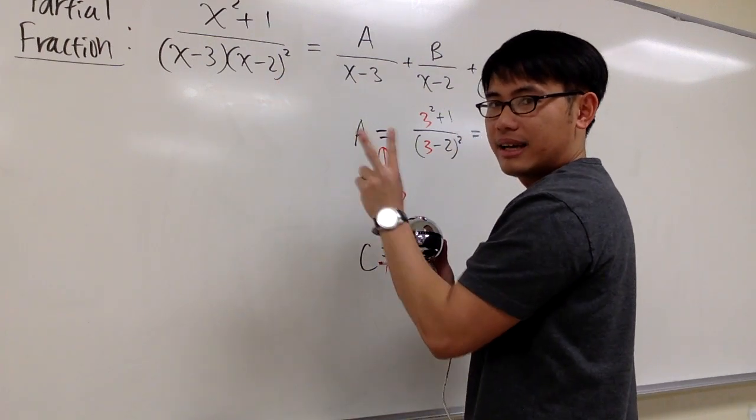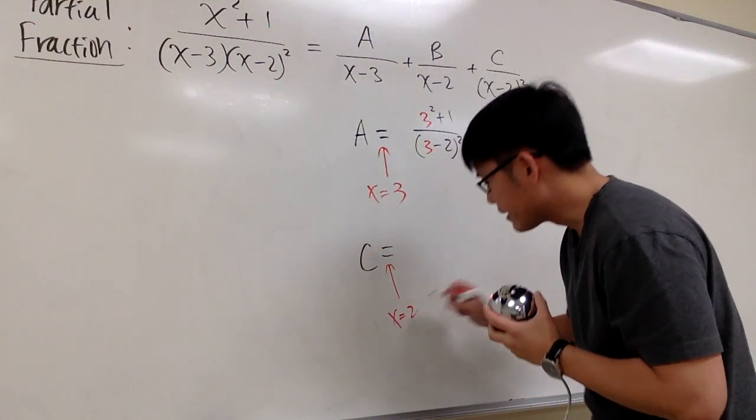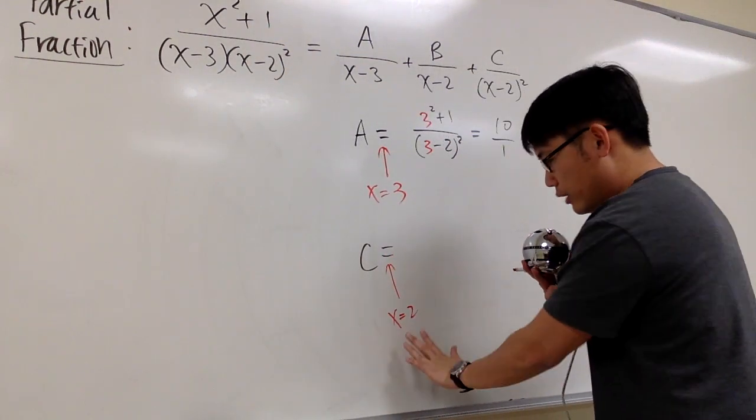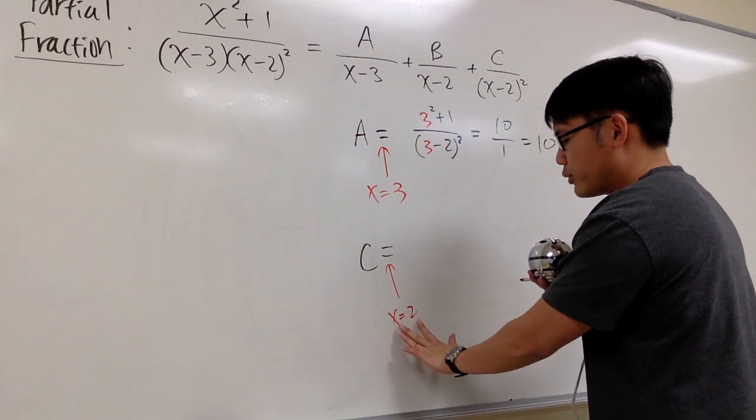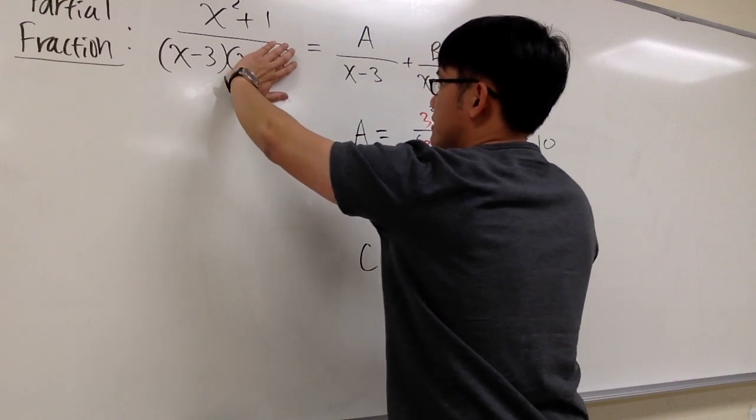You have to ask yourself, how can you make this 0? And the answer is that x is equal to 2. So the moment you cover this up, you have to ask yourself how you can make that 0. Once you get a number, which is x is equal to 2, plug in 2 into this x and that x.